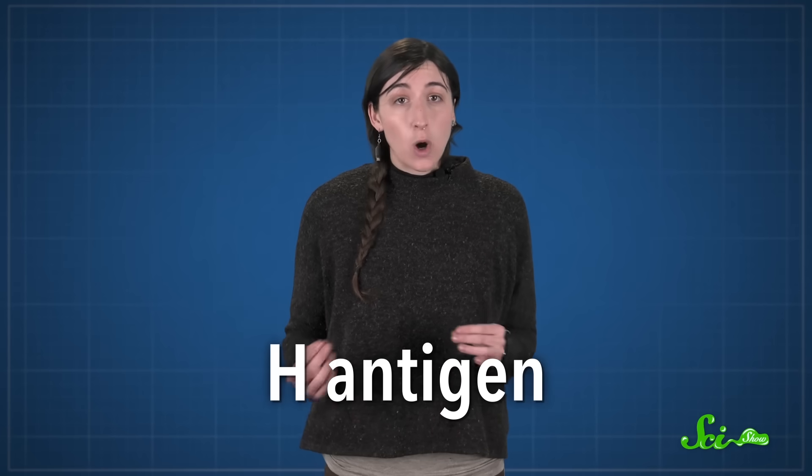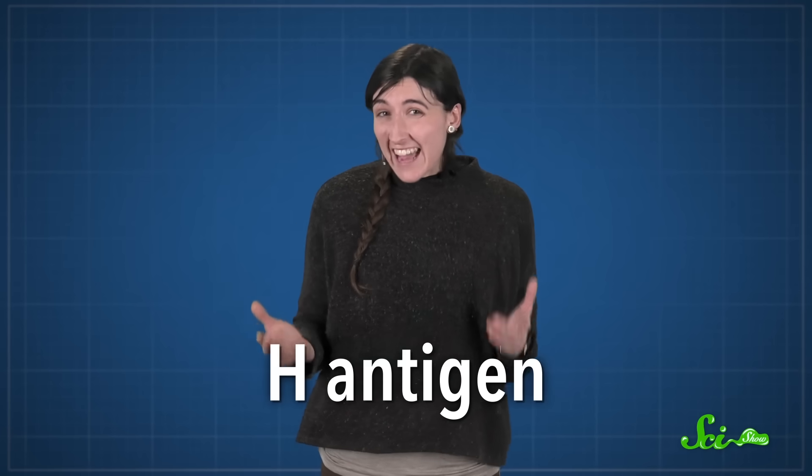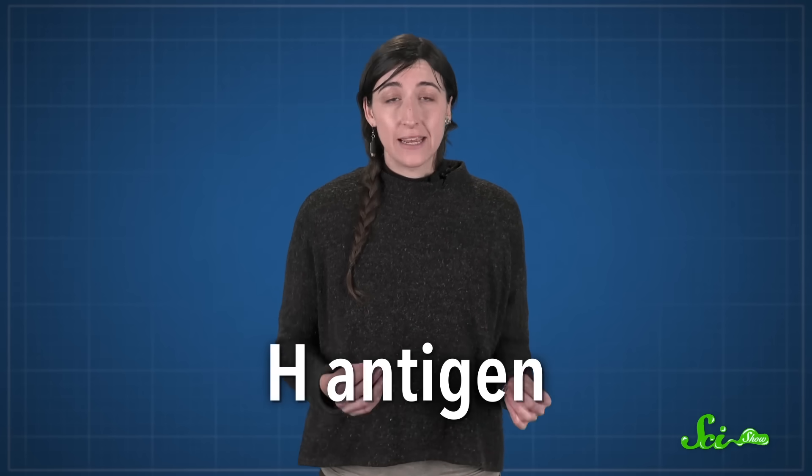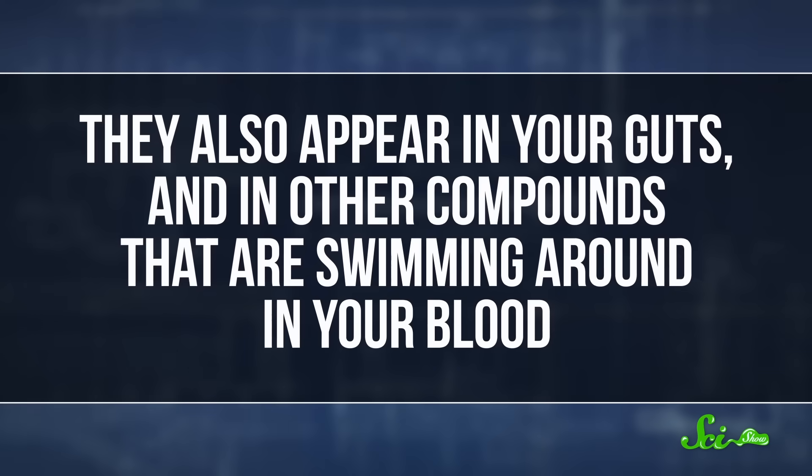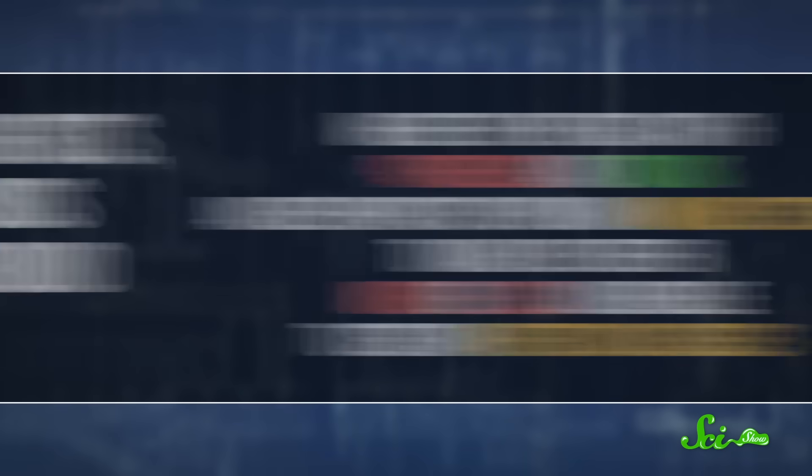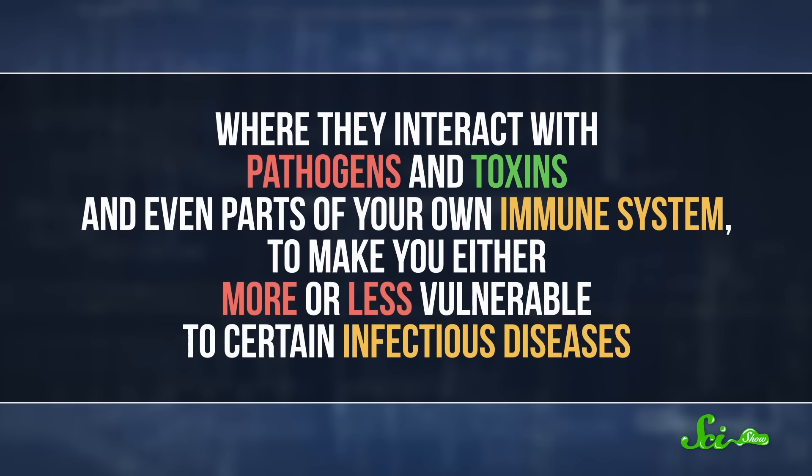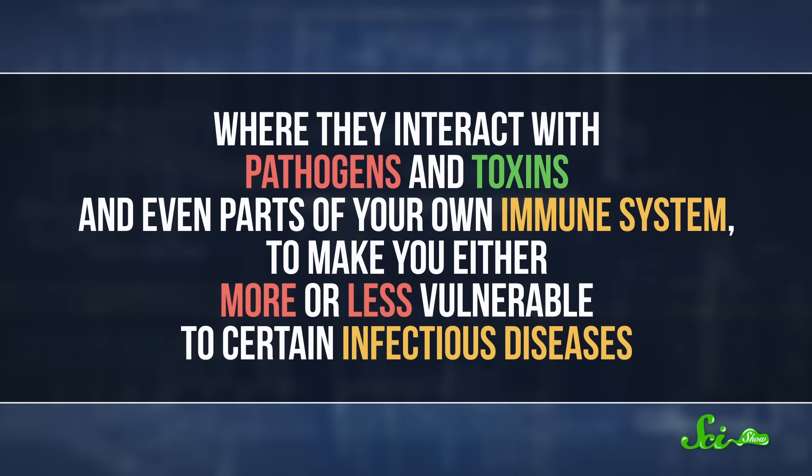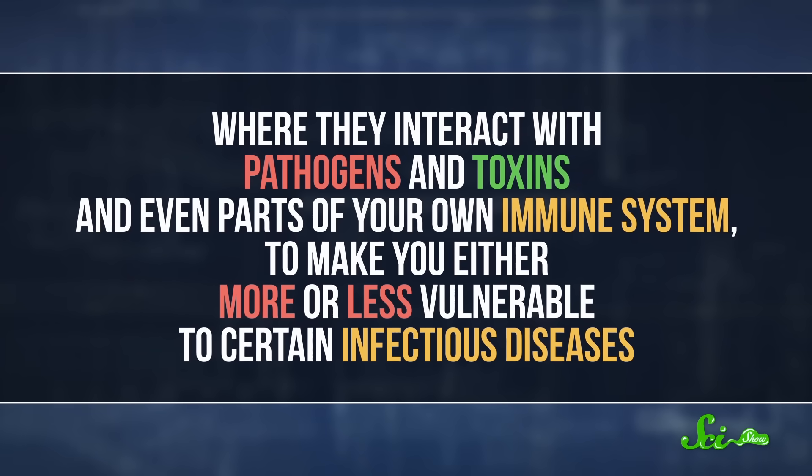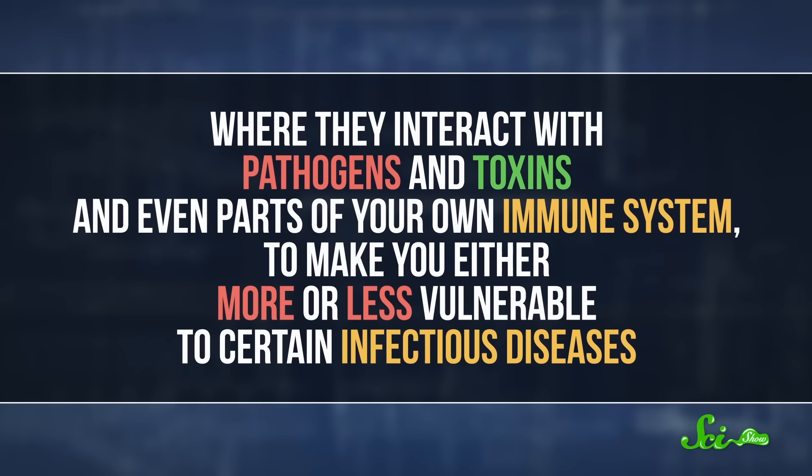The A and B that you always hear about are really extra sugars that are added onto antigen H. And what's more, all of these sugars aren't just on your red blood cells. They also appear in your guts and other compounds that are swimming around in your blood, where they interact with pathogens and toxins, and even parts of your own immune system, to make you either more or less vulnerable to certain infectious diseases.